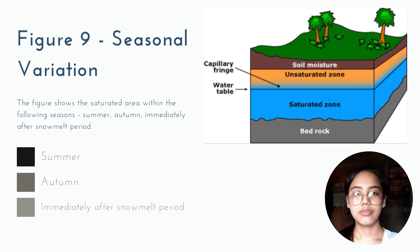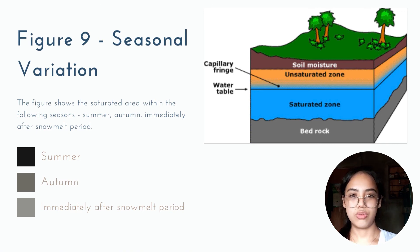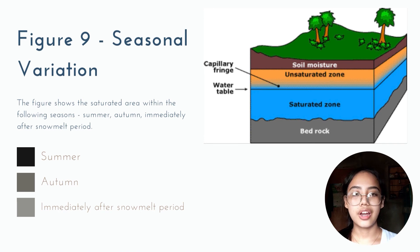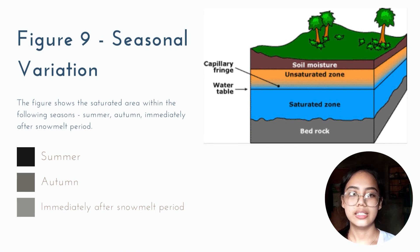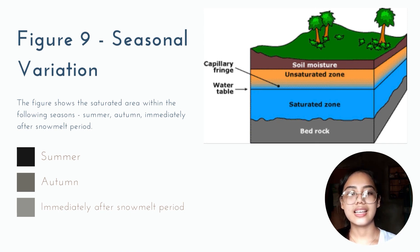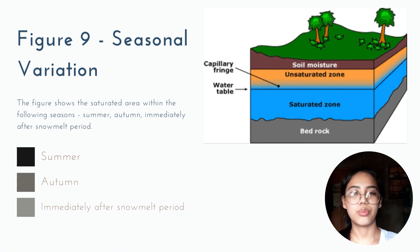For the same concept, Figure 9 shows the saturated area between different seasons. The darkest shade shows the saturated area during summer. The lighter shade shows the saturated area during autumn. The lightest shade shows the saturated area after the snow melt period.